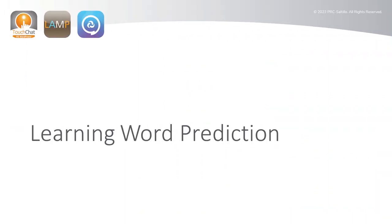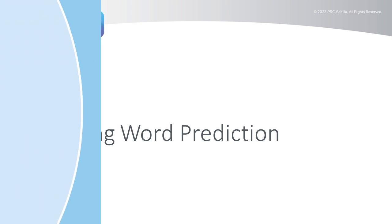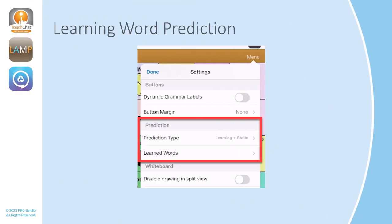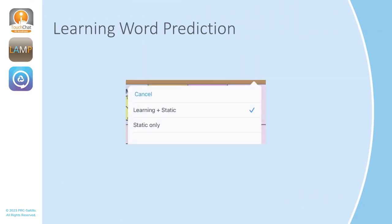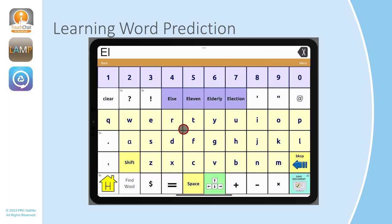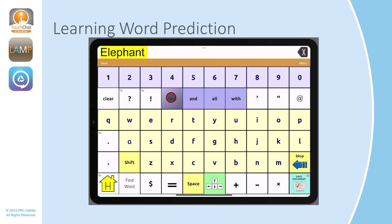In version 2.46, all of the PRC Saltillo AAC apps will have Learning Word Prediction. You will have the option of choosing the Prediction Type and then selecting the Static Built-In Word Prediction Dictionary or using the Learning Word Prediction and Static Dictionary. Words being predicted on the keyboard will be based on the frequency of the words you use. The more the word is used, the sooner it will show up in the word prediction list.